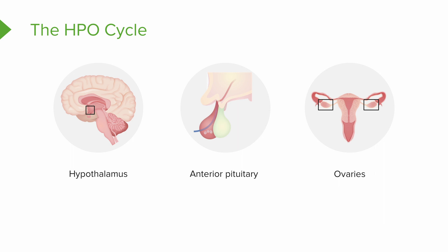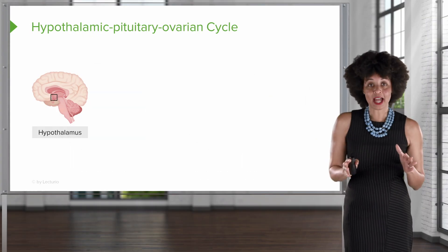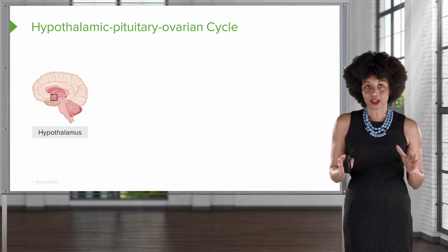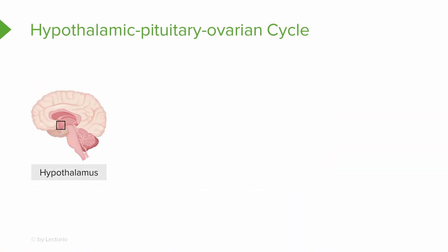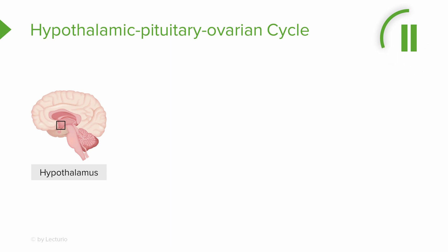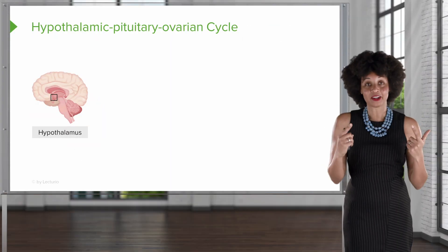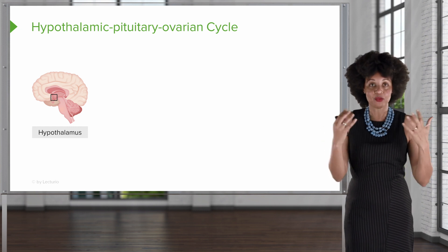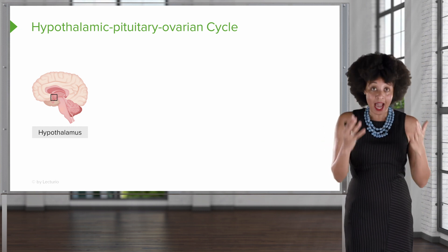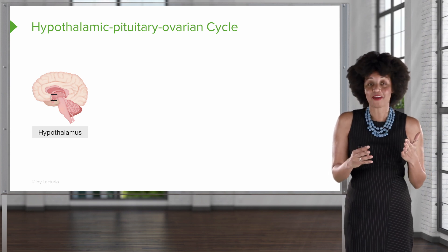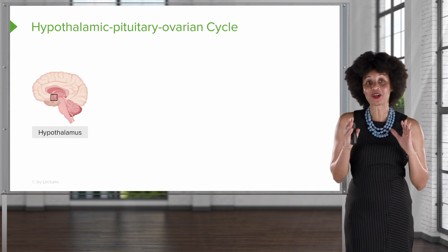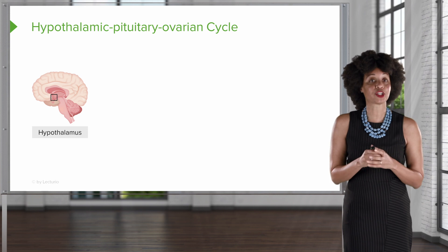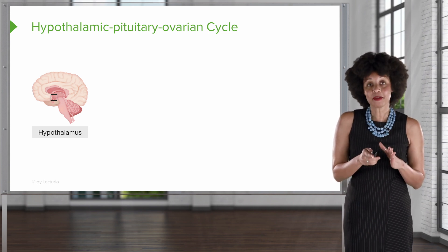Let's look at what's going on in the hypothalamus. The hypothalamus controls lots of things, not just reproduction. When we think about things like being hungry and when we've had enough to eat, or whether we're cold or hot, the hypothalamus lets us know. But here today, we're going to talk about how the hypothalamus controls the menstrual cycle.